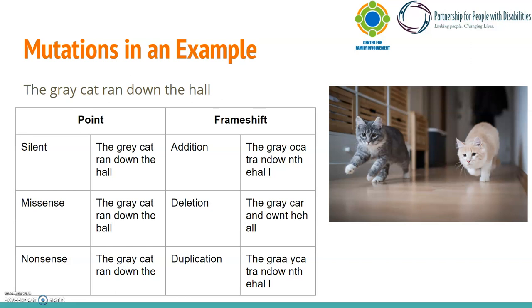Finally, we have duplications, where an already present letter or base gets repeated. This again shifts everything in the sentence, so now it's incoherent. Overall, frameshift mutations are messy because they change how everything past the mutation is read, while point mutations change one letter but leave the other words or codons alone. One thing to note is that with frameshift mutations, it is entirely possible that an entire word or codon is added so the sentence is still understandable — an example of this would be a duplication reading: the the gray cat ran down the hall. It still makes sense and doesn't change everything downstream, but adding the extra word makes it a little awkward.